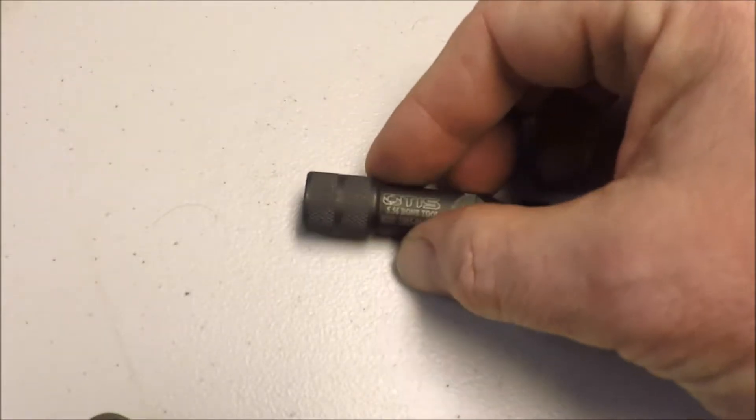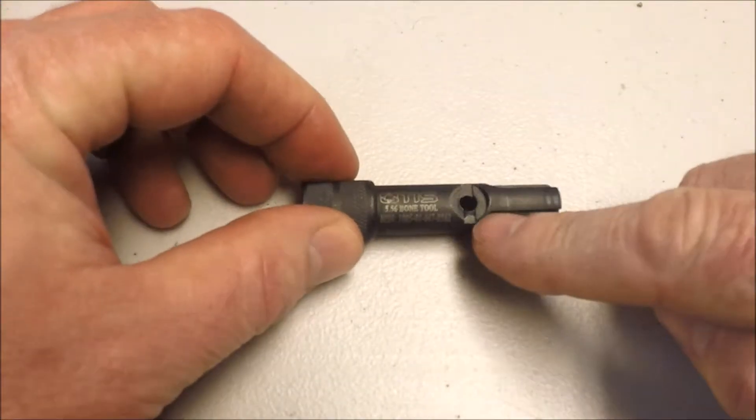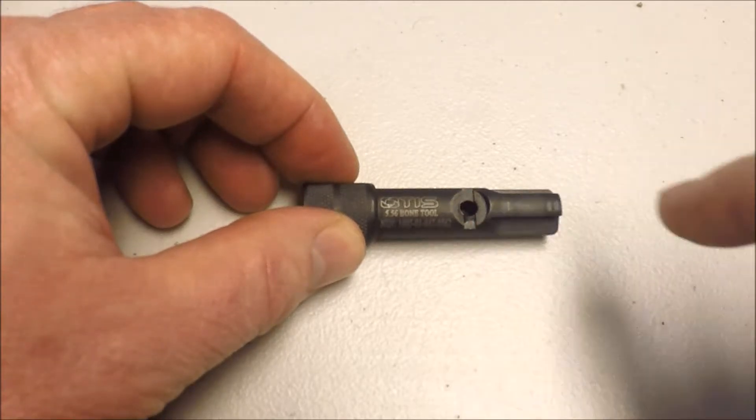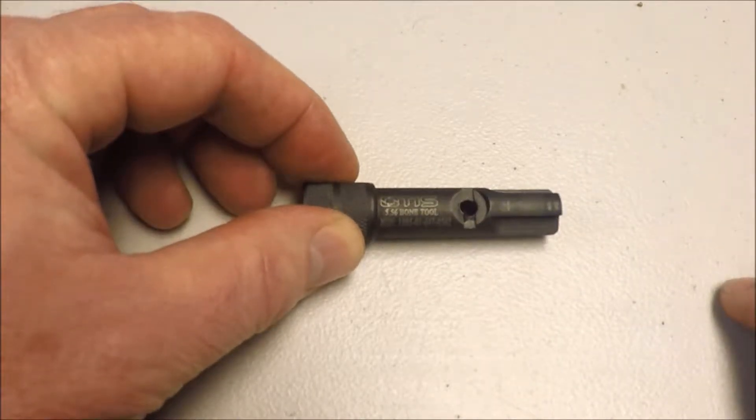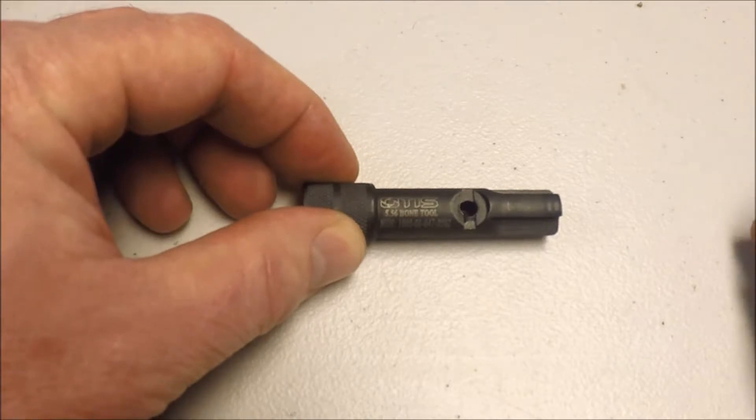And finally, you have this little section here which is specifically designed to put your firing pin through and scrape off all the crud that comes off on your firing pin and builds up around that flange.